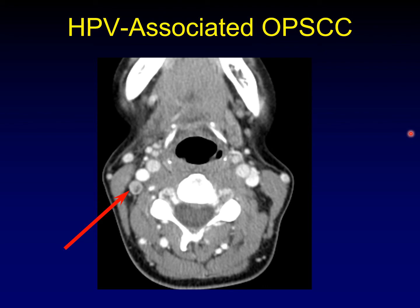HPV-associated oropharyngeal squamous cell carcinomas can also have different timing patterns of recurrence. This is a recurrent metastatic node detected after the patient was clinically and radiologically negative for a long time — this scan was taken 38 months after conclusion of therapy, more than three years. We know that for squamous cell carcinoma, 95% of recurrences in the PET-CT era will be detected in the first two years, so a recurrence after three years is really a curveball. HPV-associated disease does weird things.